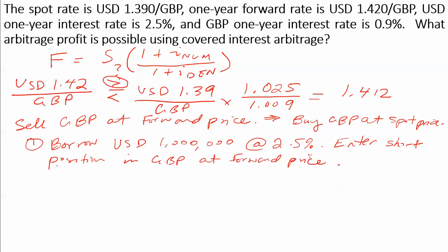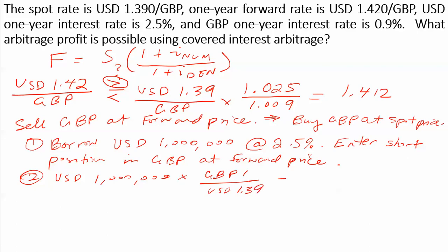I'm going to use the dollars to convert to British pounds, because we know we have to buy British pounds at the spot price. The spot rate is one British pound per $1.39, which gives us 719,424 British pounds.